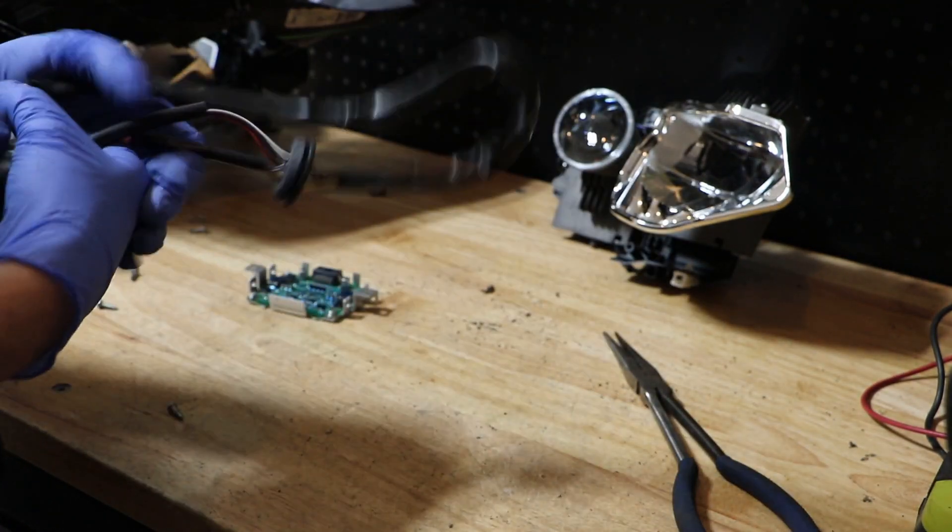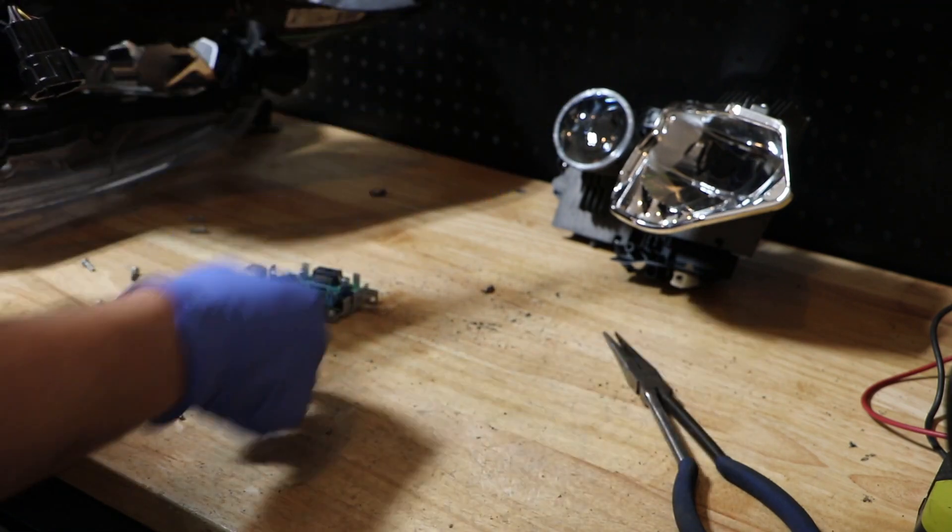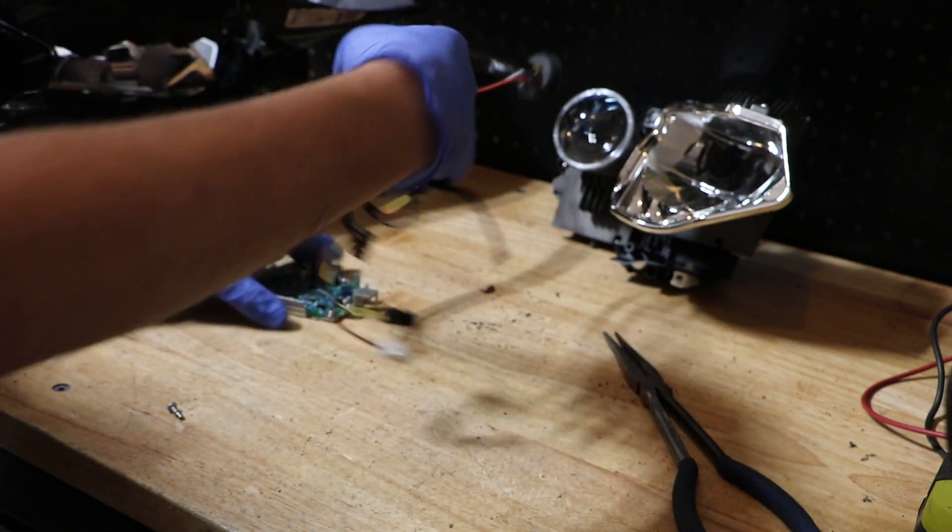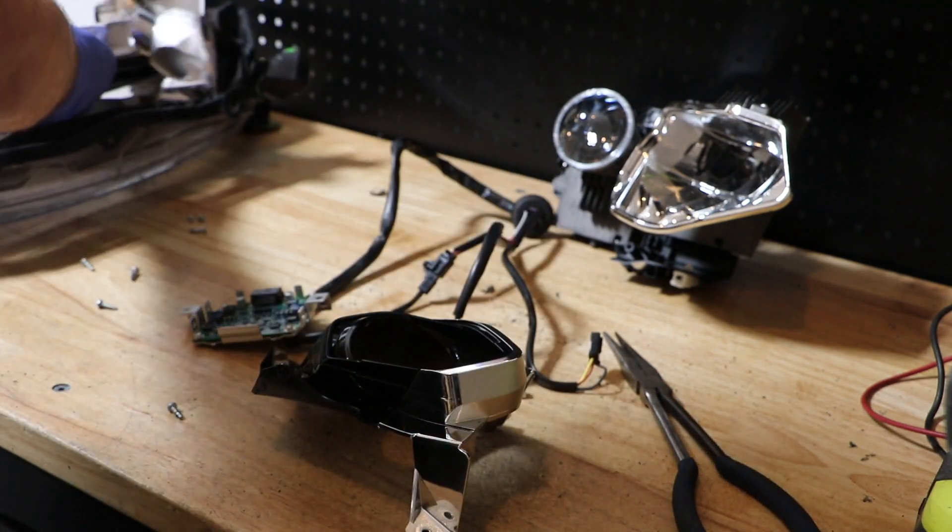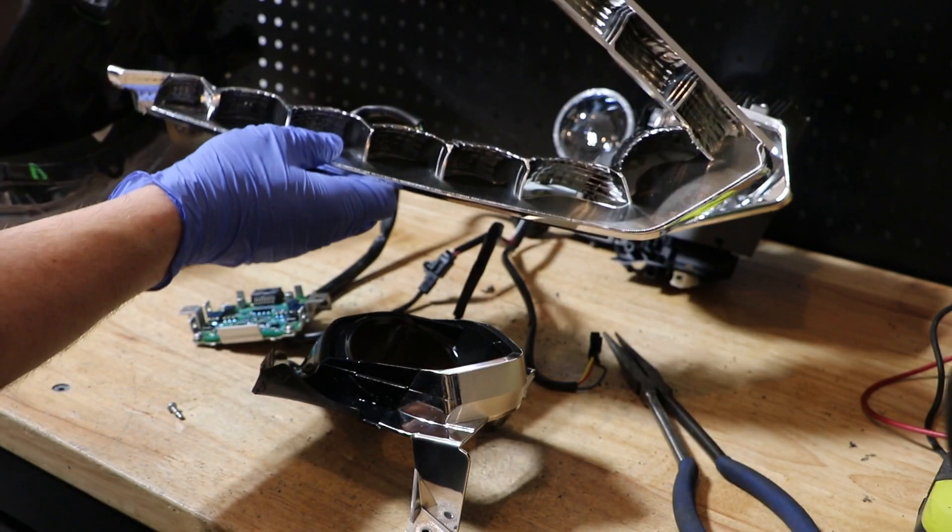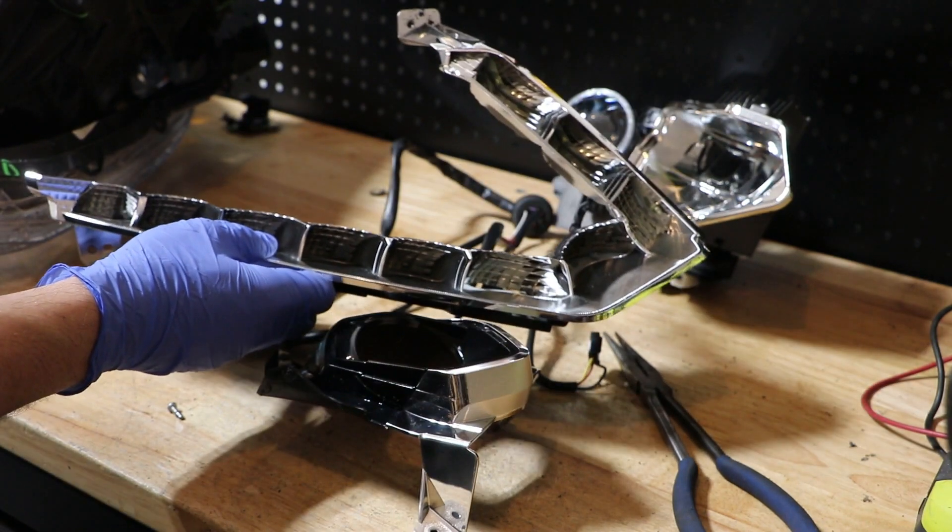That's all there is to this. Now we have the high and low beam separated, the wire harness, the control unit, and the daytime running light.